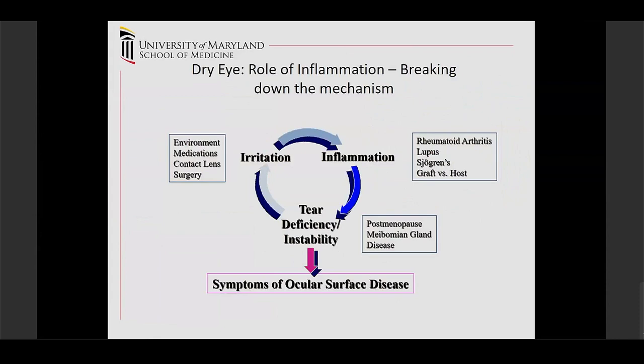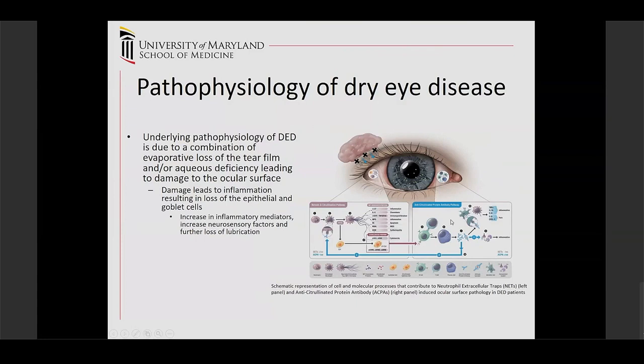For example, environmental factors, medications, or contact lens issues cause irritation, which leads to inflammation, which then causes tear deficiency, leading to more irritation — and it continues. It doesn't really matter where you enter the cycle; you end up with all the problems. This goes back to the point that this is really a spectrum. The underlying pathophysiology is a combination of evaporative loss and aqueous deficiency leading to damage of the ocular surface.